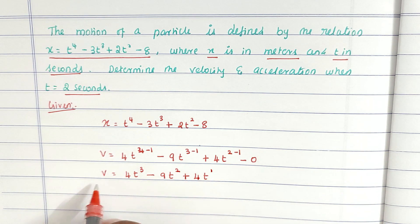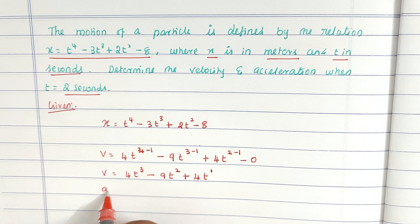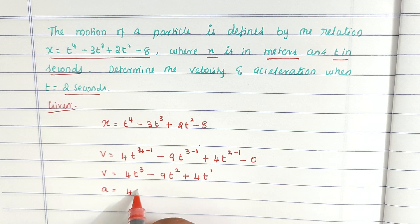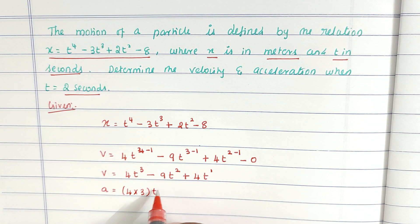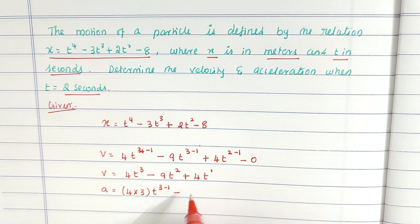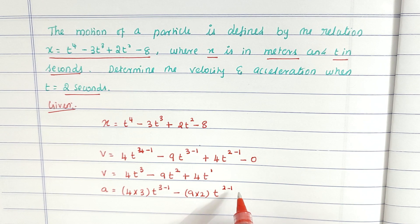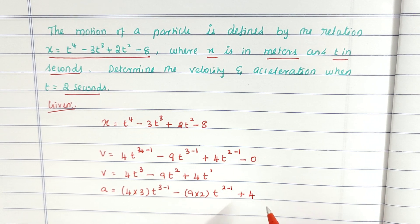For acceleration, we differentiate the velocity equation: a equal to 4 into 3 into t power 3 minus 1, minus 9 into 2 into t power 2 minus 1, plus 4.